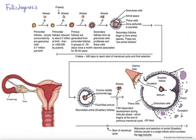In this diagram we'll examine the process of folliculogenesis. Folliculogenesis is the development of the cells associated with the female gamete cell, the egg or oocyte. It occurs in its entirety within the ovary.